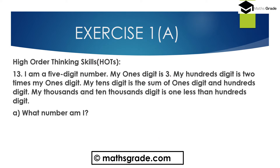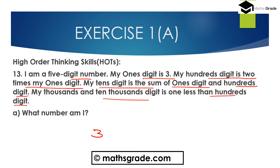Now question number 13 — High Order Thinking Skills. First question: I am a 5-digit number. My 1's digit is 3. My 100's digit is 2 times my 1's digit. My 10's digit is the sum of the 1's digit and 100's digit. My 1,000's and 10,000's digit is 1 less than the 100's digit. What number am I? So this is a 5-digit number. My 1's digit is 3. My 100's digit is 2 times 3, which is 6.